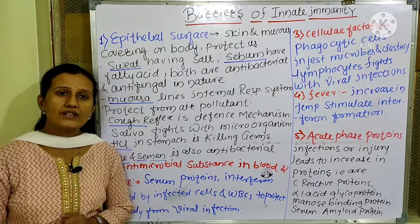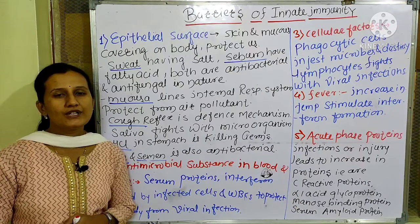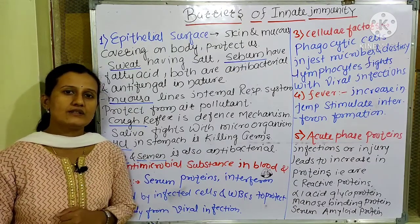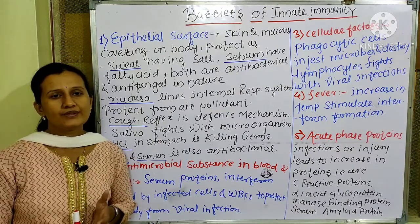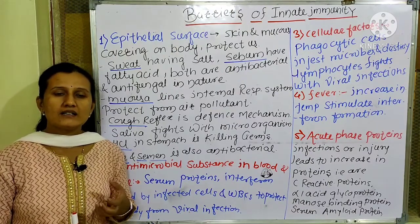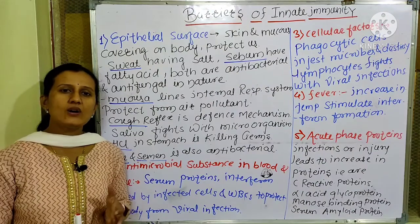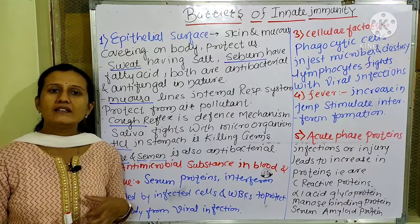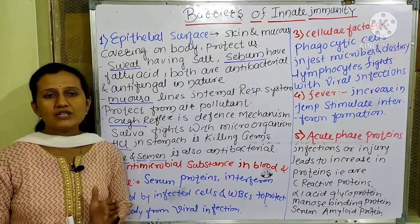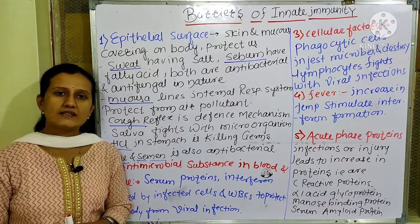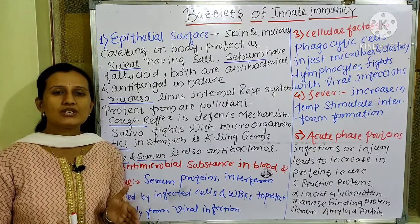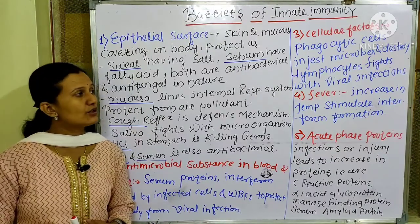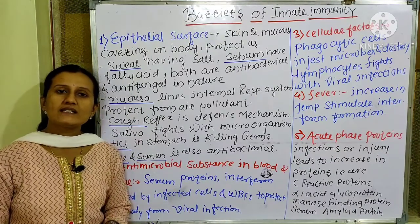We have two types of immunity. What is immunity? It is the resistance power against the antigen. What is an antigen? Antigens are substances, materials, or any organism which invades our body, attacks our body, and creates infections, inflammations, and causes diseases. That is called an antigen.